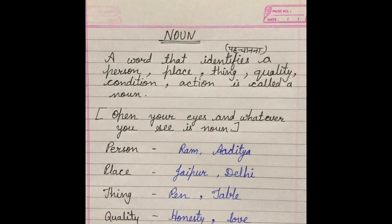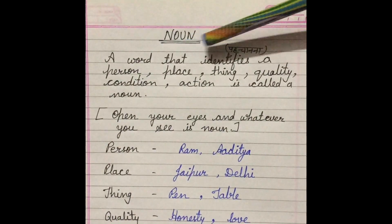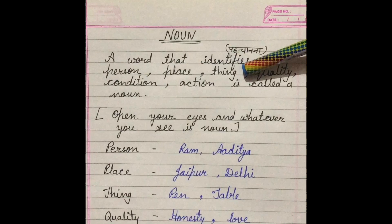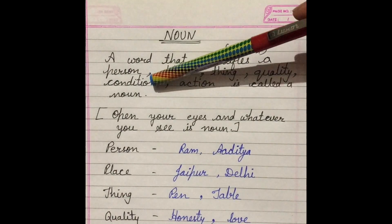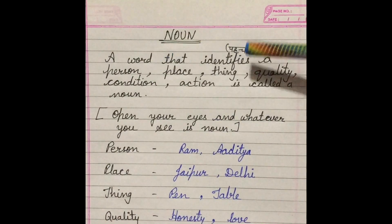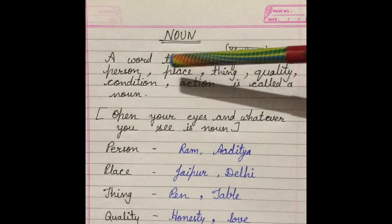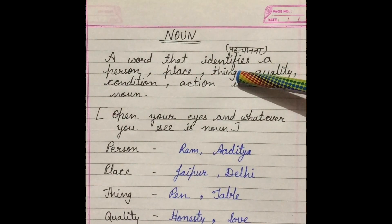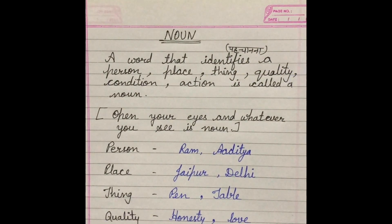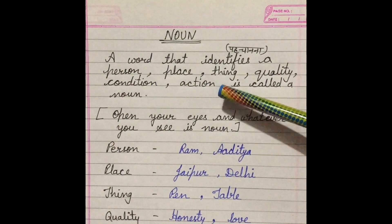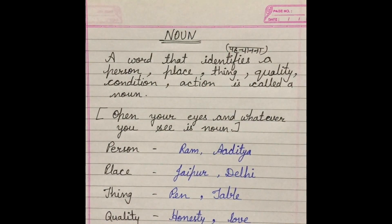Noun, Sangya - a word that identifies a person, place, thing, quality, condition, or action is called a noun. A word which is a person, place, thing, quality, condition, or action is what you say is noun.